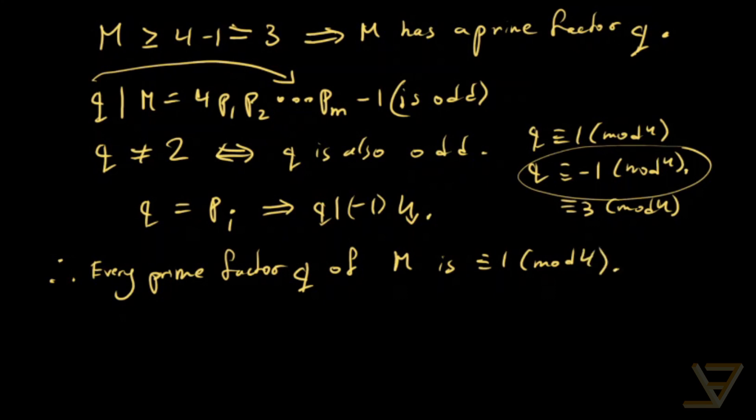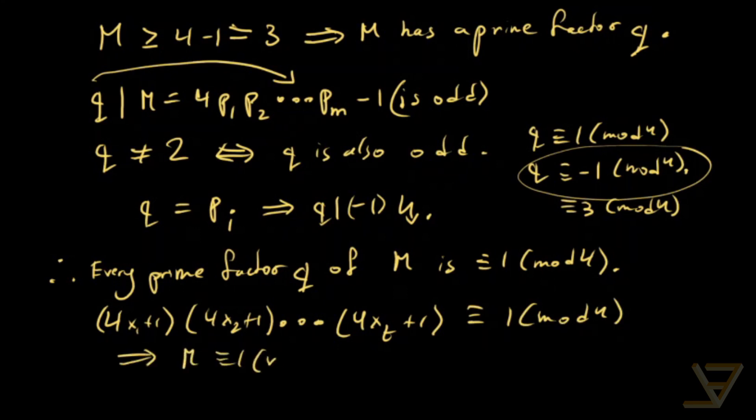And if that's the case, notice that (4x1+1)(4x2+1)...(4xt+1), a product of primes not necessarily distinct that are of this form, is congruent to 1 mod 4. So that means M is congruent to 1 mod 4.